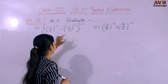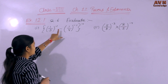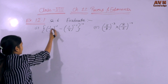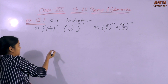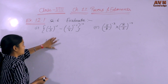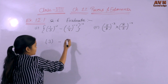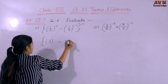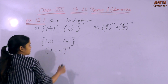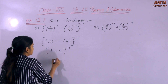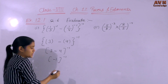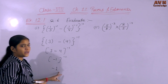Question number 6 — Evaluate. First part: (1/3) raised to the power minus 1, minus (1/4) raised to the power minus 1, whole raised to the power minus 1. Since the power is negative, we take the reciprocal: 1/3 becomes 3, and 1/4 becomes 4. So we get (3 minus 4) raised to the power minus 1, which is (minus 1) raised to the power minus 1. The reciprocal of minus 1 is minus 1. So the answer is minus 1.